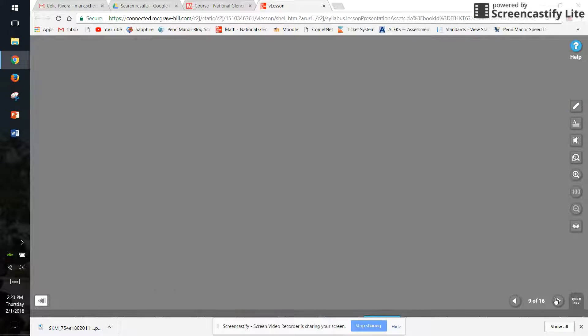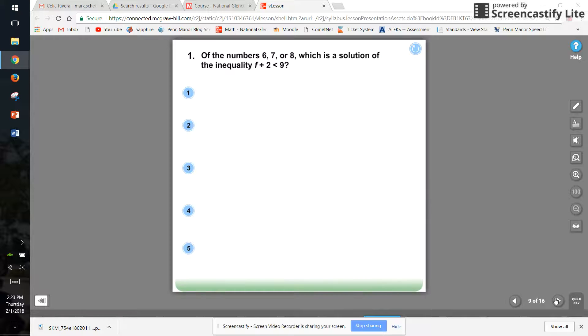Let's take a look at a problem. Here we have an inequality. The variable's f. F plus two is less than nine. I have to think of all the numbers that I can put in for f that will make this be true. Well, there's three examples given of what we should try: one, two, three.